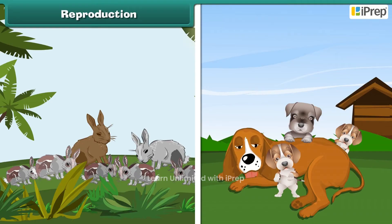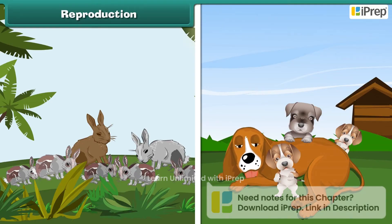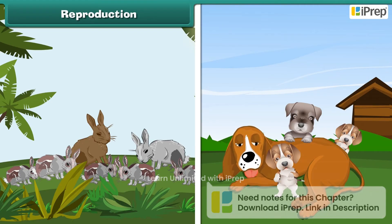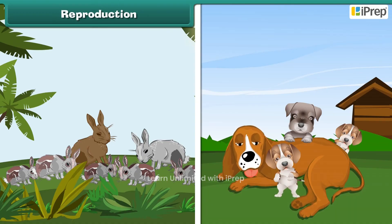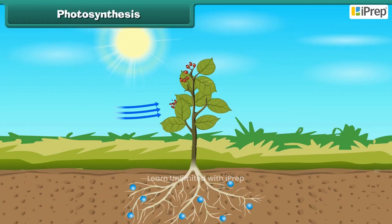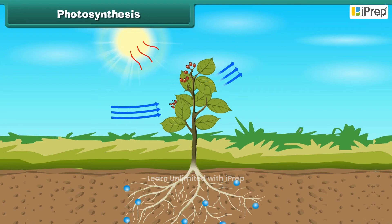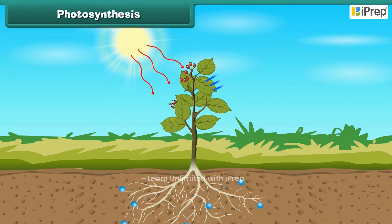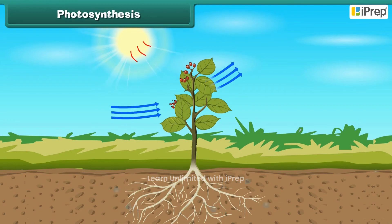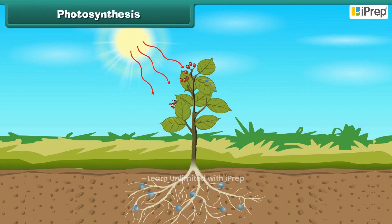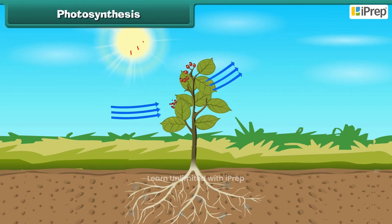All living things can produce young ones. This is called reproduction. Living things increase their numbers by reproduction.